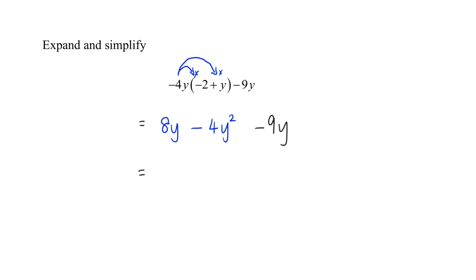And now all we have to do is to simplify the like terms. There is only one y squared term: negative 4y squared. And I can simplify 8y minus 9y, which will give me negative 1y.